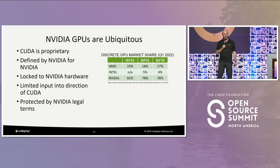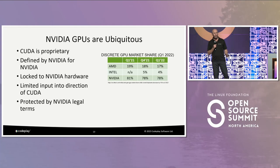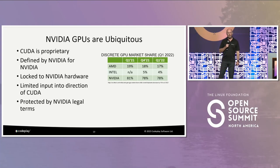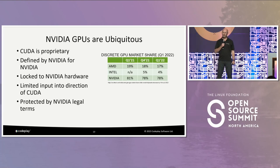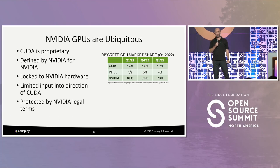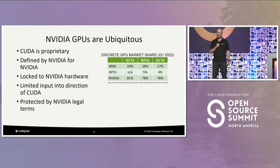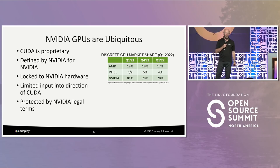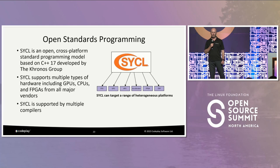It's proprietary, it's defined by NVIDIA, and it's for NVIDIA — for their own GPUs — so it's locked to their hardware. You have limited input to steer and contribute into CUDA. It's very much dictated by NVIDIA and there are some fairly substantial legals around it to limit your use of it. So it really is a proprietary lock-in. But most people doing programming in this environment start off with NVIDIA GPUs as an accelerator, and most people use CUDA.